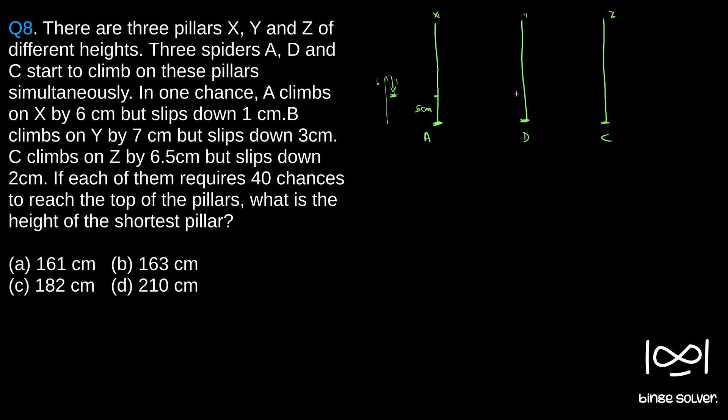Similarly, the effective distance B covers is 7 centimeter minus 3 which is 4 centimeter. Effective distance D covers in one single step is 4 centimeter. Similarly, for C, it is 6.5 minus 2, so 4.5 centimeters it covers.